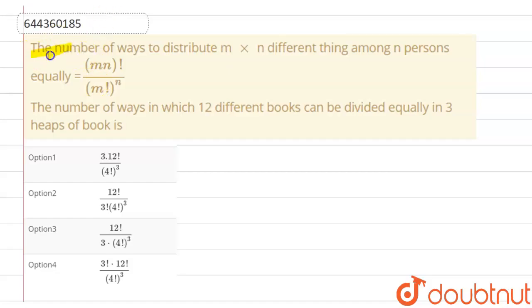The number of ways to distribute m into n different things among n persons equally is equal to m into n factorial divided by m factorial raised to the power n.